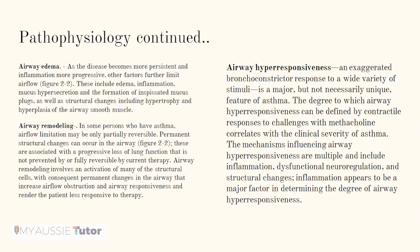Airway edema: as the disease becomes more persistent and inflammation more progressive, other factors further limit airflow — as shown in the previous diagram — including edema, inflammation, mucus hypersecretion, permanent mucus plugs, and inspissated mucus, as well as structural changes including hypertrophy and hyperplasia of the airway smooth muscle. Airway remodeling: in some persons with asthma, airflow limitation may only be partially reversible. Permanent structural changes can occur in the airway associated with a progressive loss of lung function that is not prevented or fully reversible by current therapy.